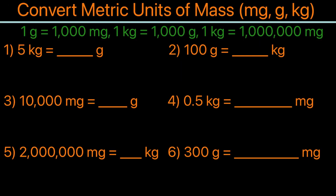The three conversions are: 1 gram equals 1,000 milligrams, 1 kilogram equals 1,000 grams, and 1 kilogram equals 1,000,000 milligrams.